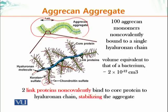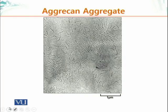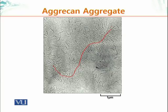The volume of this aggregate is approximately 2 × 10⁻¹² cubic meters, which is about the size of a bacteria. Here is an electron micrograph — an actual image rather than a cartoon. You can see the hyaluronic acid backbone to which core proteins are attached, and to those core proteins there are other GAG molecules attached. This entire structure is held together by link proteins through non-covalent interactions.